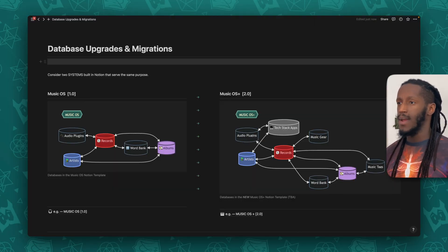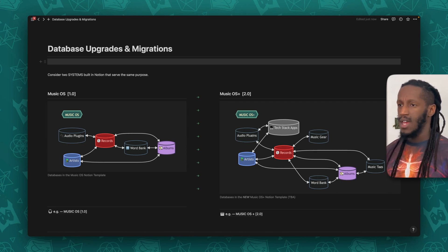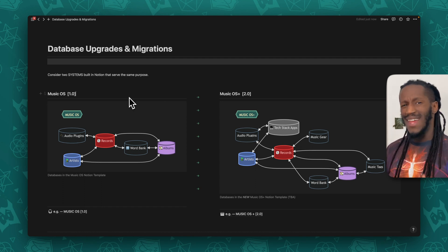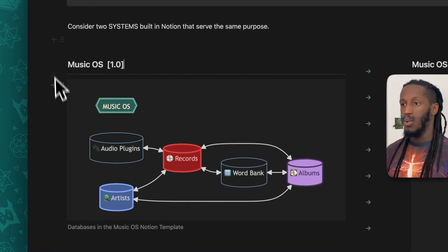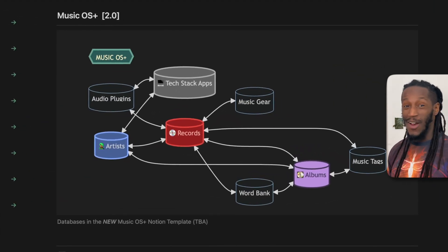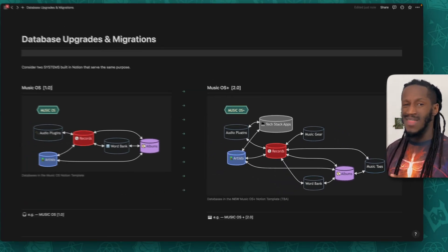We're talking about database upgrades and migrations. Let's consider two parallel systems built in Notion that serve the same purpose. We're going to use the Music OS as an example here. Say we have version one of this template system — the Music OS 1.0 — and then what we want to do is upgrade to the new Music OS Plus, which will be version 2.0 of that system.